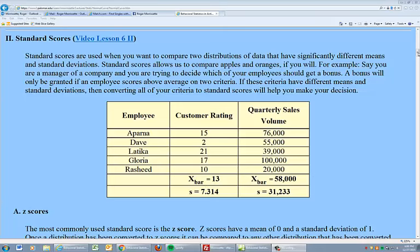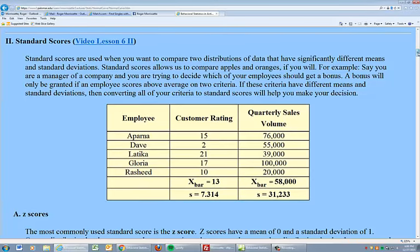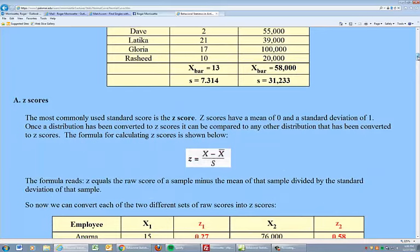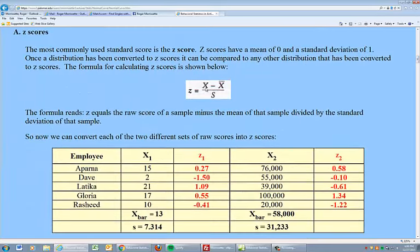What we can do, though, to help us is to convert these to standard scores. And the most common standard score is something called the Z-score. The Z-score is just the raw score minus the mean over the standard deviation.